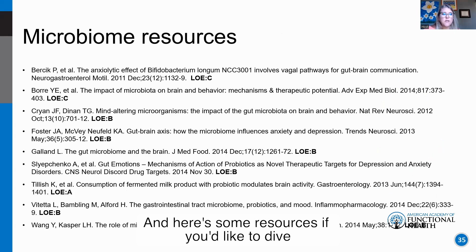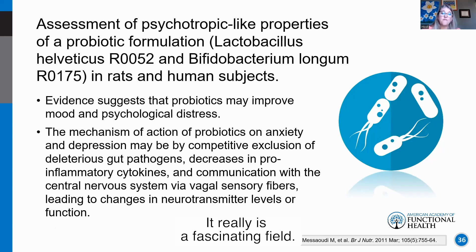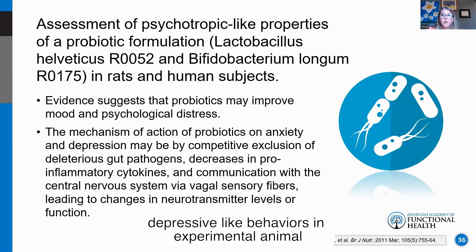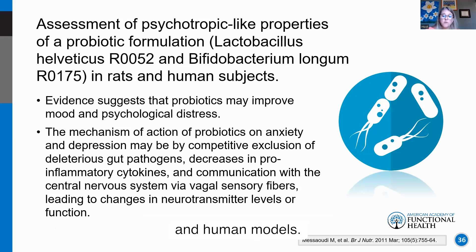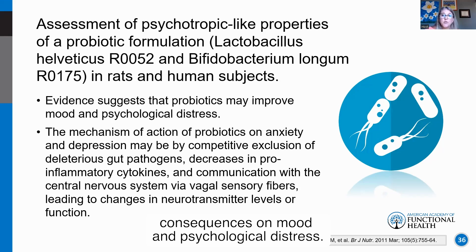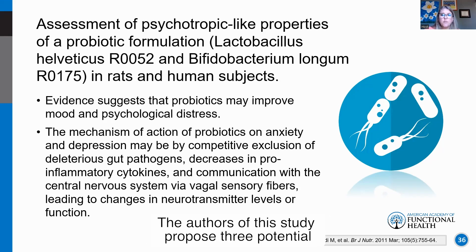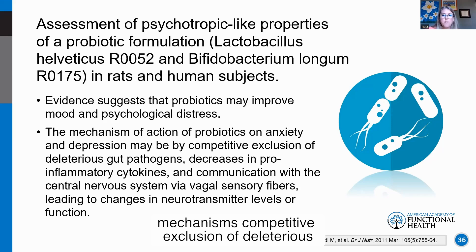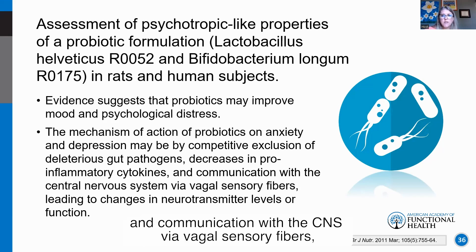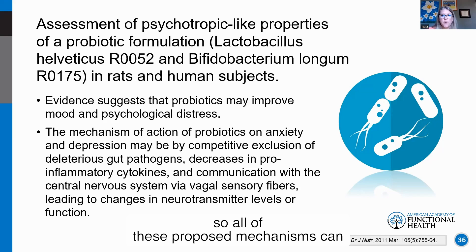Nutritional tools for altering the gut microbiome include dietary changes, prebiotics, and probiotics. Probiotics can attenuate anxiety and depressive-like behaviors in both animal and human models, with evidence suggesting oral probiotics may have beneficial consequences on mood and psychological distress. Three proposed mechanisms include competitive exclusion of deleterious gut pathogens, decreases in pro-inflammatory cytokines, and communication with the CNS via vagal sensory fibers — all of which can affect neurotransmitter secretion.